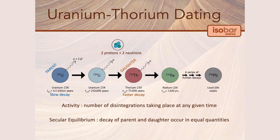When uranium decays, it goes through a series of decay steps beginning with uranium-238, until it eventually reaches a stable isotope, ending in lead-206. Here you can see the initial parent isotope decaying into the daughter isotopes: uranium-234, thorium-230, radium-226, and so forth.